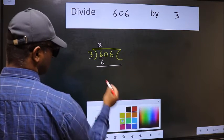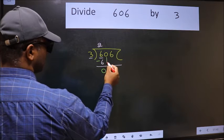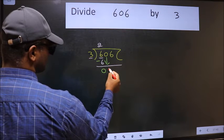Now we should subtract. We get 0. After this, bring down the beside number. So 0 down.